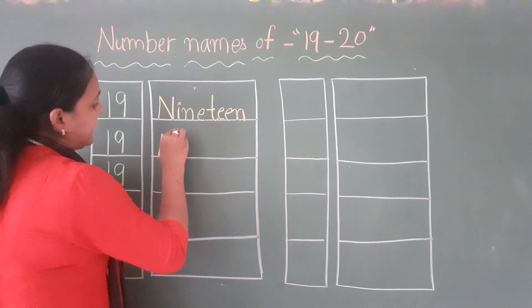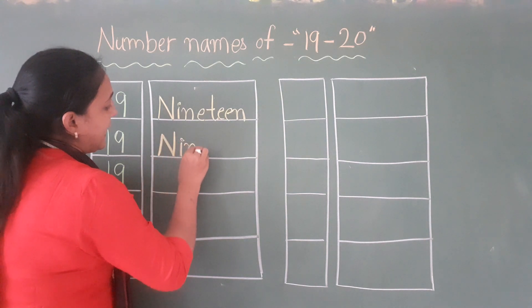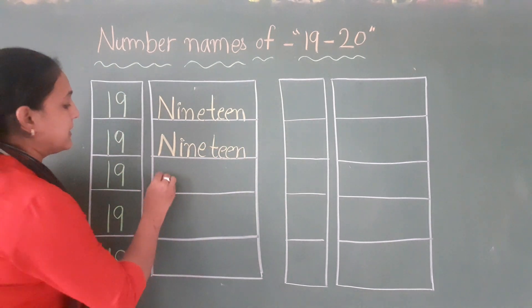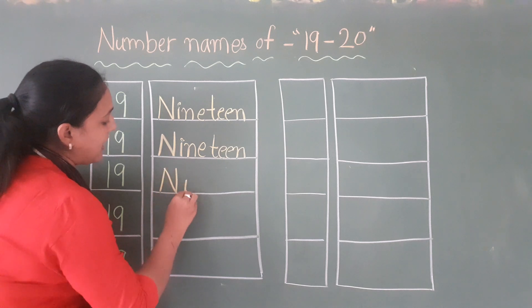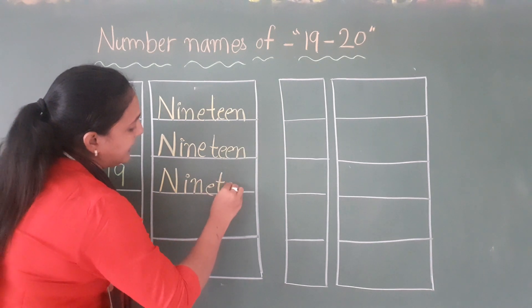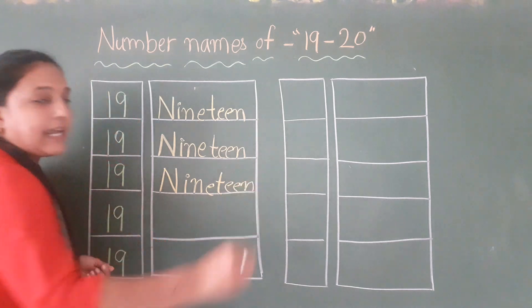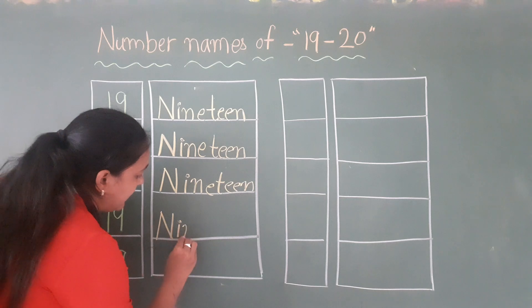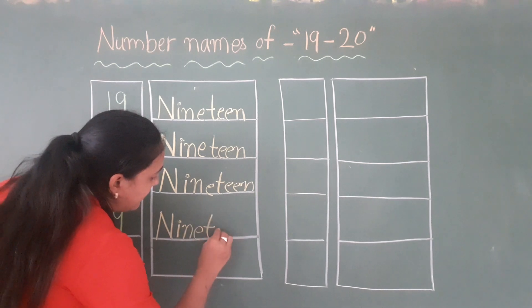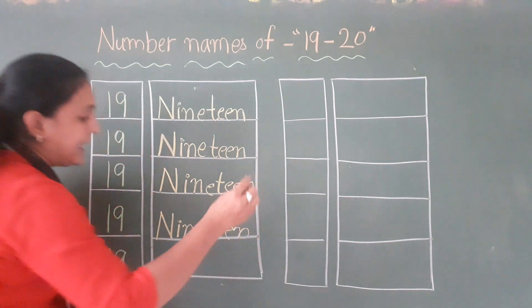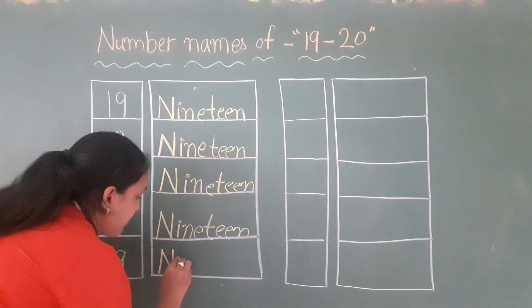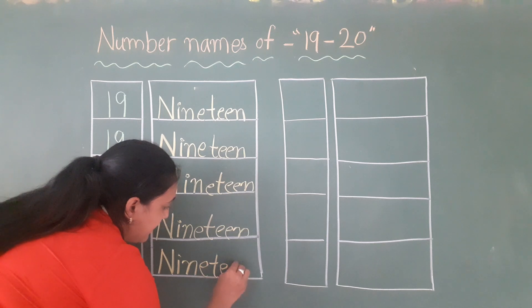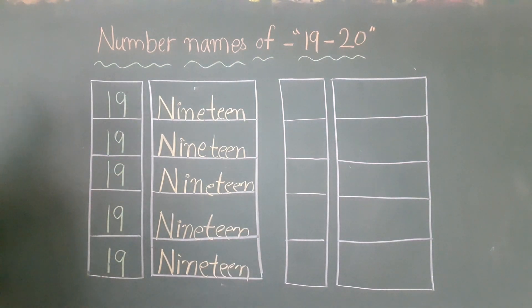Ab uske aage likhenge 19 ka spelling: N-I-N-E-T-E-E-N. 19. Toh aage likhenge 19 ka — N-I-N-E-T-E-E-N. 19. (Repeated for practice.) Okay?